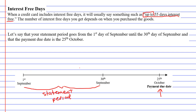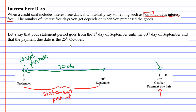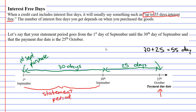Let's say that you purchase something right at the beginning of the statement period — on the 1st of September. How many days is it until the payment is due? Well, to work that out we first need to figure out how many days there are in September: 30 days. And from the 1st to the 25th of October is 25 days. So 30 plus 25 gives us 55 days interest-free.